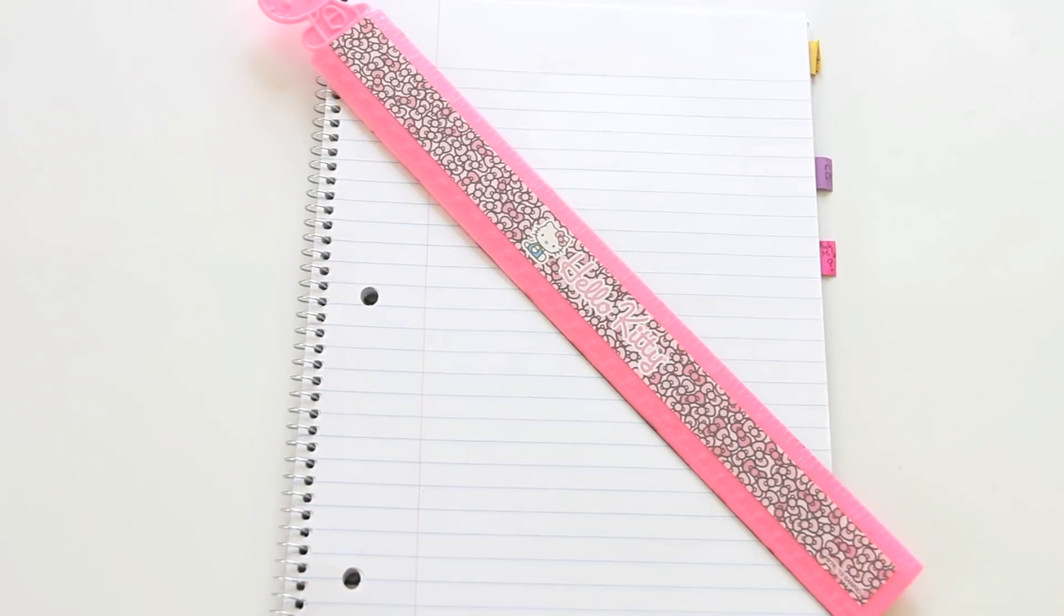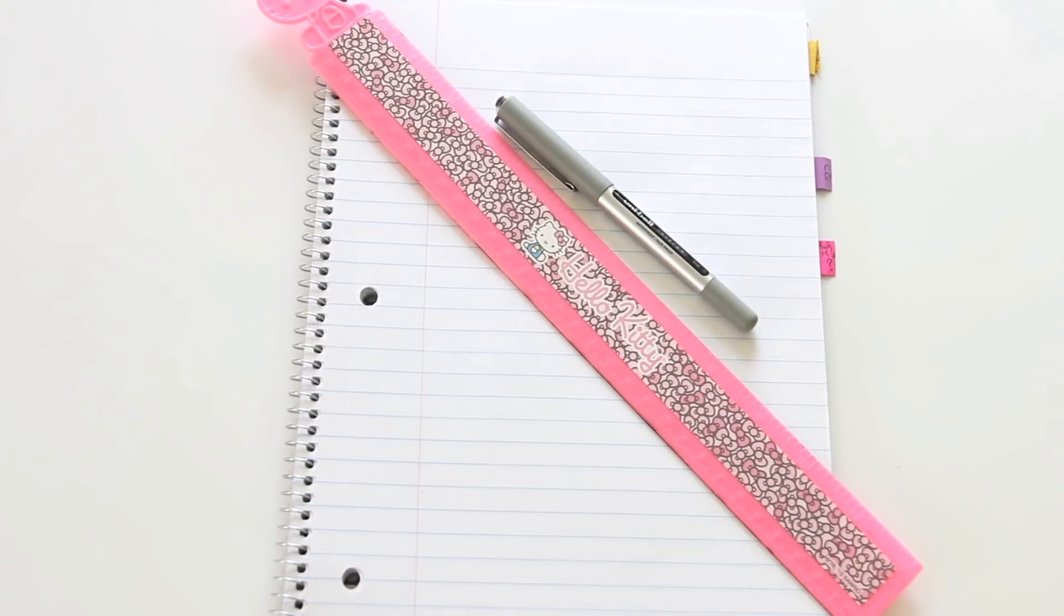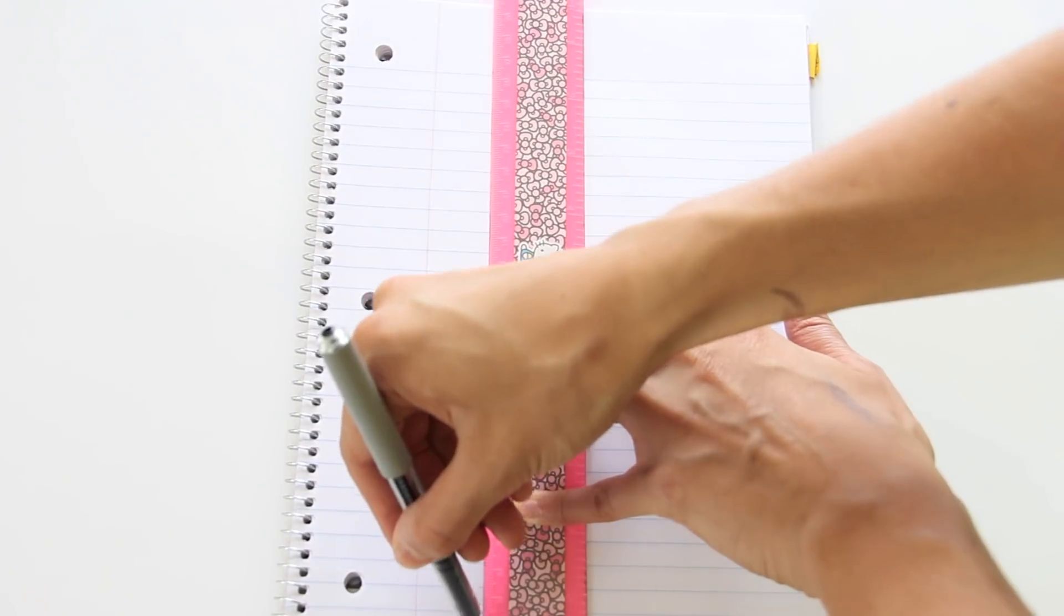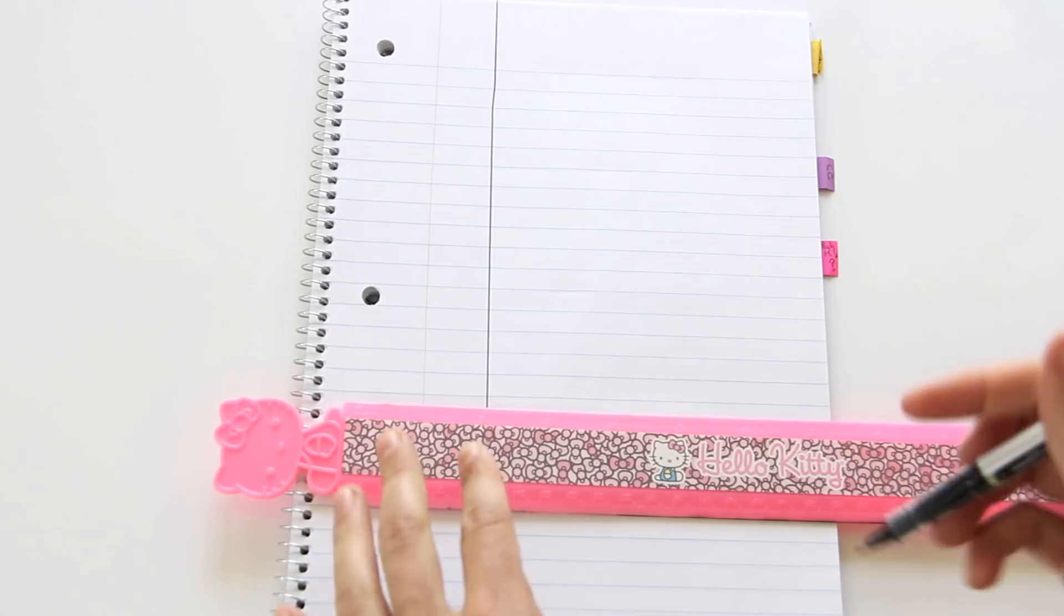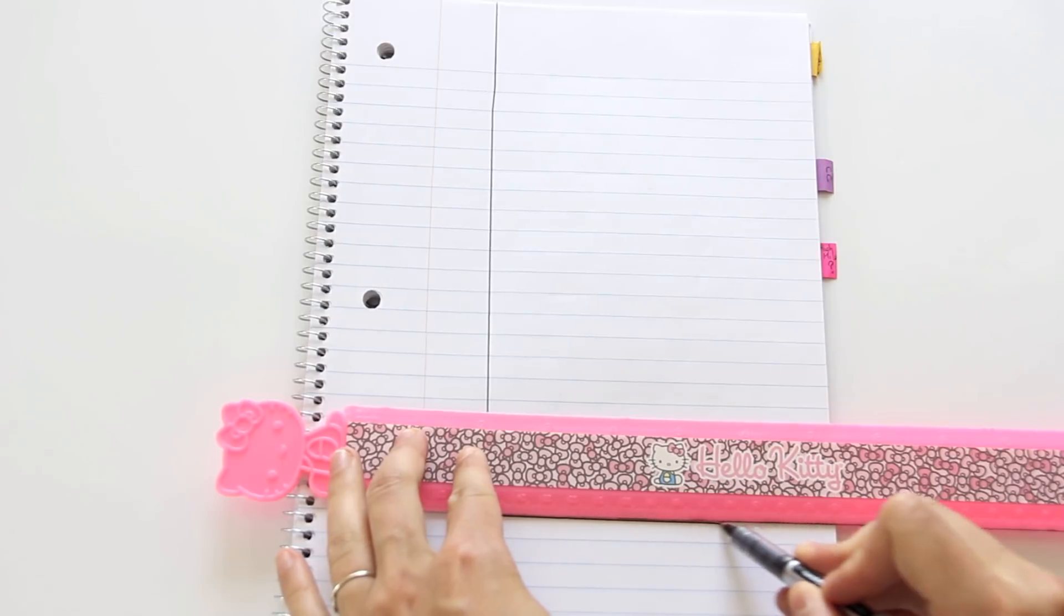With your piece of paper or notebook, you're going to create two lines. I'm going to use a ruler just to make it straight. And you're going to measure one vertical line about a third of the way through the paper, and then right at the bottom.